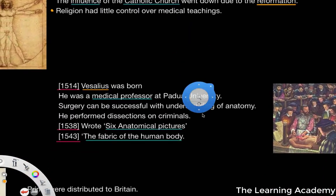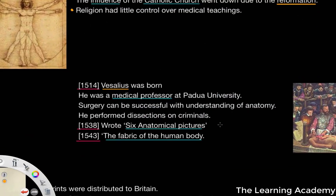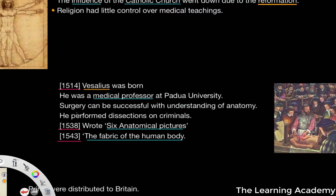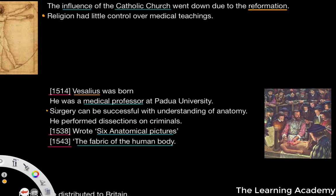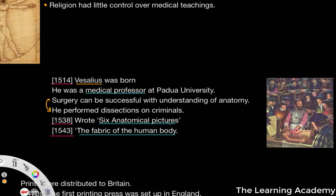There were a number of events that really broke the mould in terms of the Renaissance era. In 1514, Vesalius was born, and he was a medical professor at Padua University. He was one of the first people to understand that surgery can be successful with an understanding of anatomy. He decided to perform dissections on criminals — highly unethical by today's standards, but back then seen as acceptable.